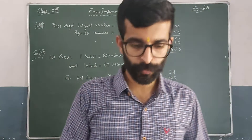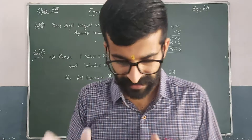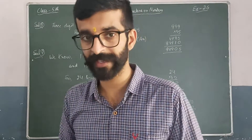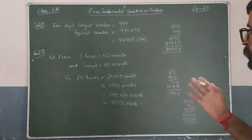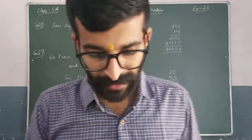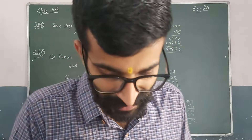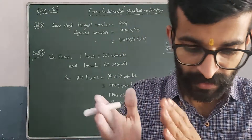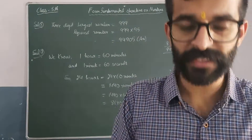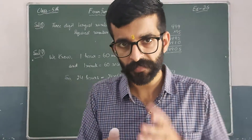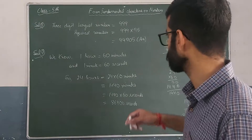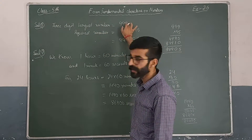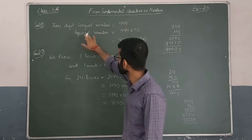Hello everyone, welcome back to our YouTube channel. Now we will discuss question number 8 and 9 of Exercise 2.6. Question 8 is: multiply the three-digit largest number with 95. First you have to find out the three-digit largest number, which is 999, and then find the required product.